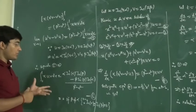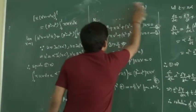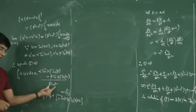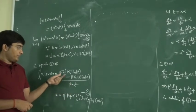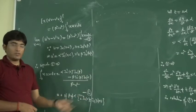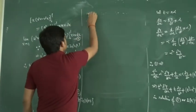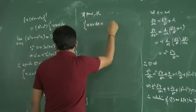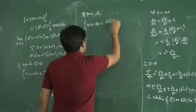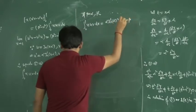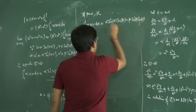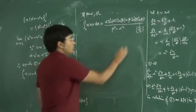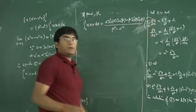Now what about when β = α? In this case the expression is of the form 0/0, since Jn(α) = 0 and Jn(β) = 0. So we use L'Hôpital's rule: as β → α, we differentiate the numerator and denominator with respect to β.